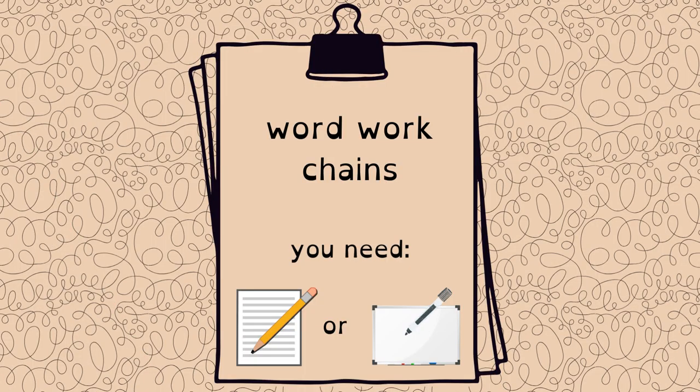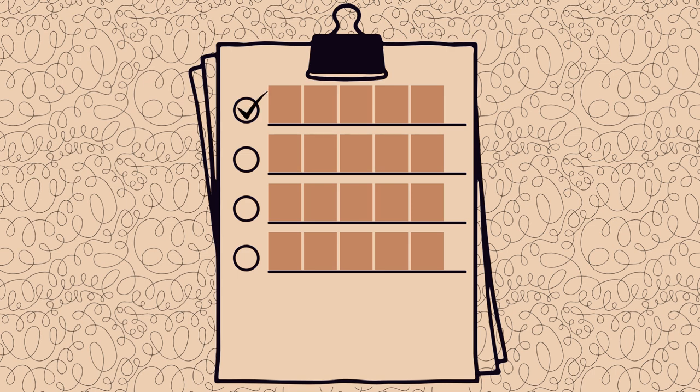Okay, time for word chains. Your first word is moth: M-O-TH. Change O to A: M-A-TH. Math.